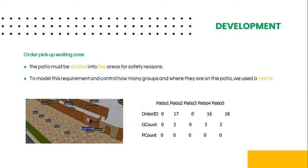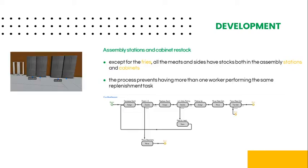This matrix registers the order ID, the size of the group, and how many orders are ready for packing. With the exception of fries, all food items have stocks both in assembly stations and cabinets. Looking in more detail at the process, the worker verifies the food availability to prepare the meal. If the quantity available is not enough, they will pick up the item from the cabinets. This process also ensures that no other worker is already making the restock.